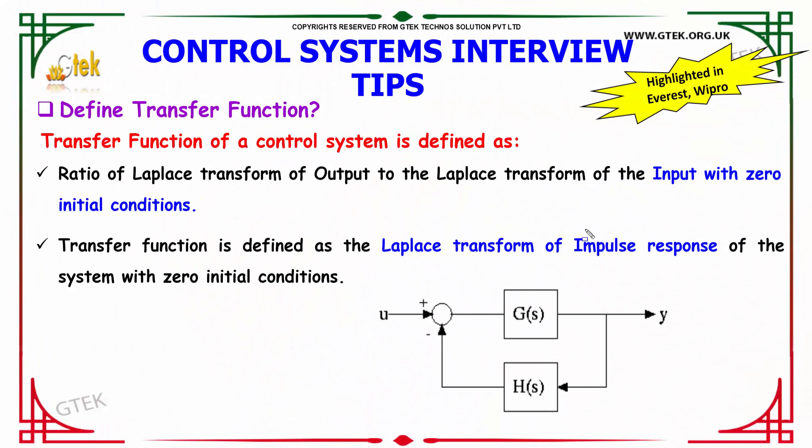Define transfer function. The transfer function of a control system is defined as the ratio of the Laplace transform of the output to the Laplace transform of the input with zero initial conditions. Transfer function is also defined as the Laplace transform of the impulse response of the system with zero initial conditions.